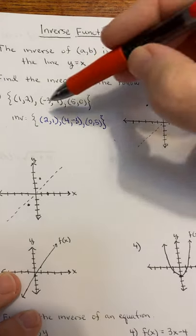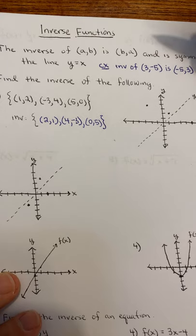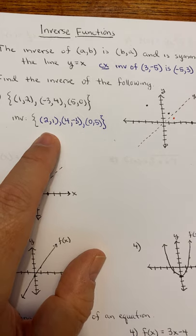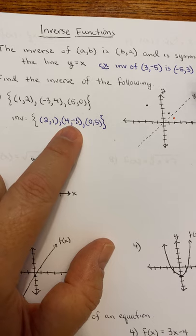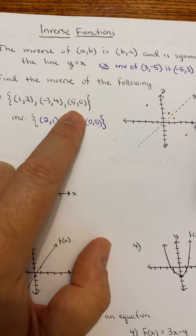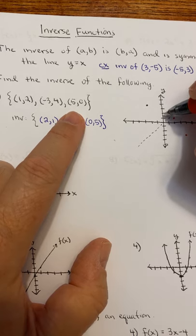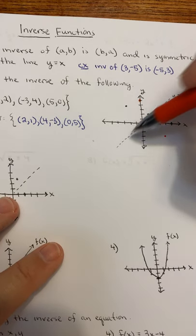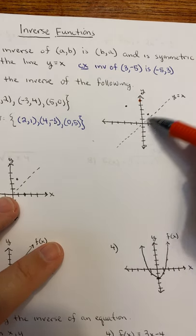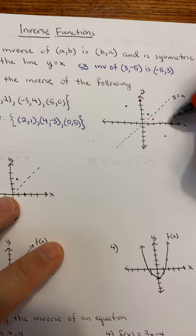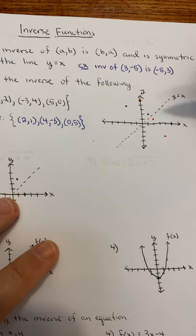I already drew the original points on the graph. The inverse (2, 1) is right here. The inverse of (-3, 4) is (4, -3) — right here, right 4, down 3. And the inverse of (5, 0) is (0, 5). You'll notice that each point is a reflection across the line y equals x. See how that's just reflected across there — these two are reflected across the line, and so are these two.